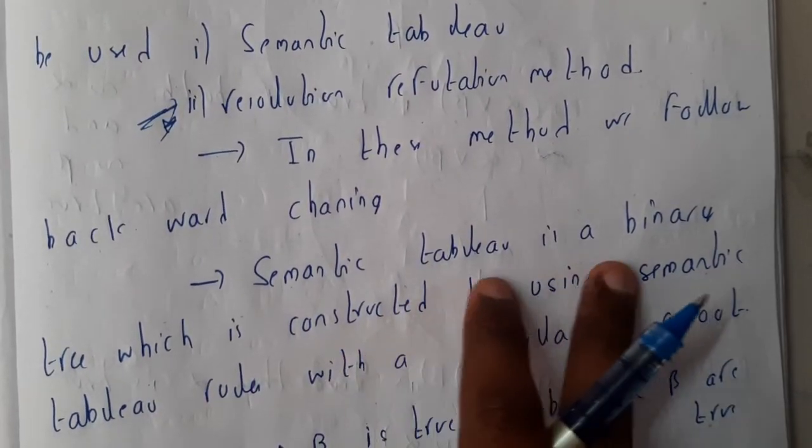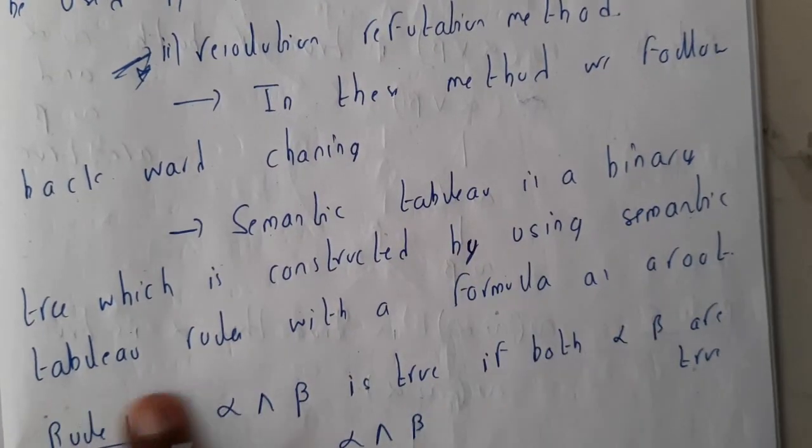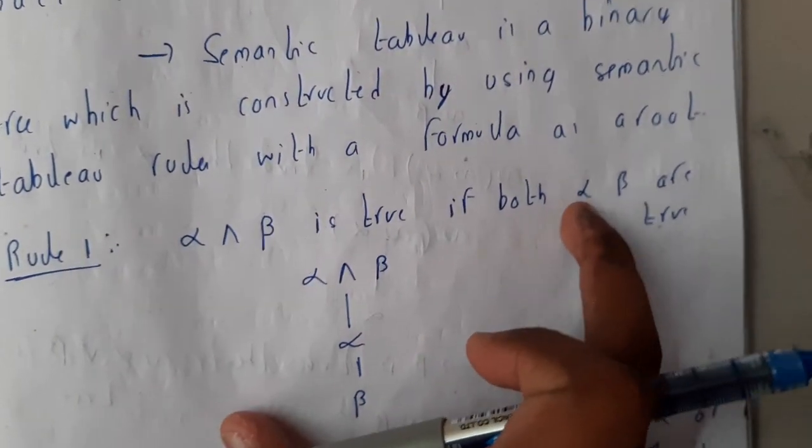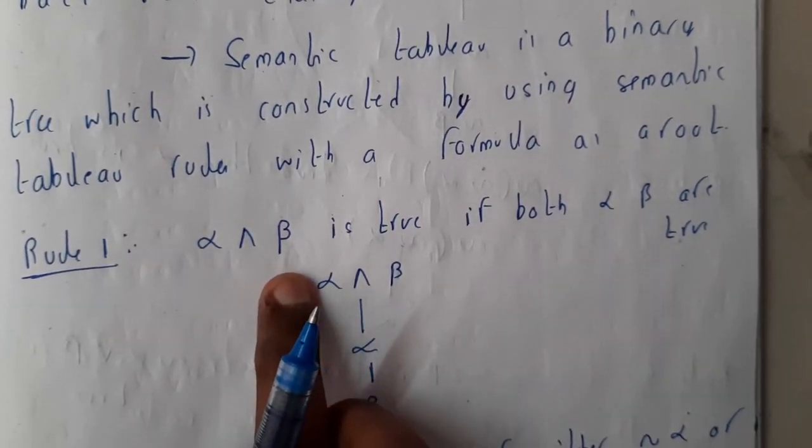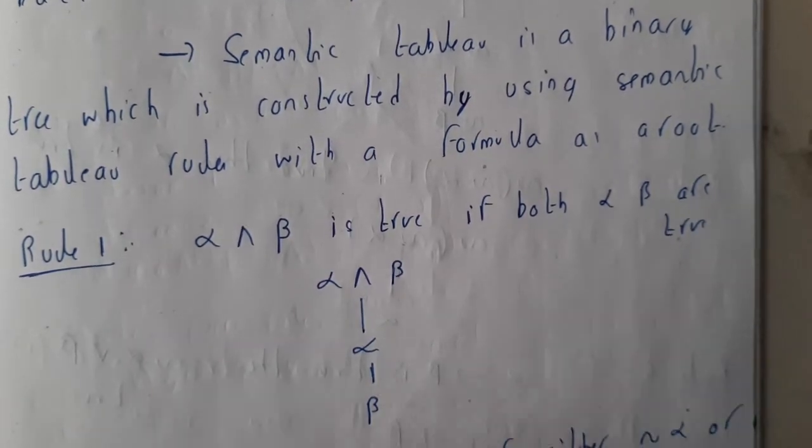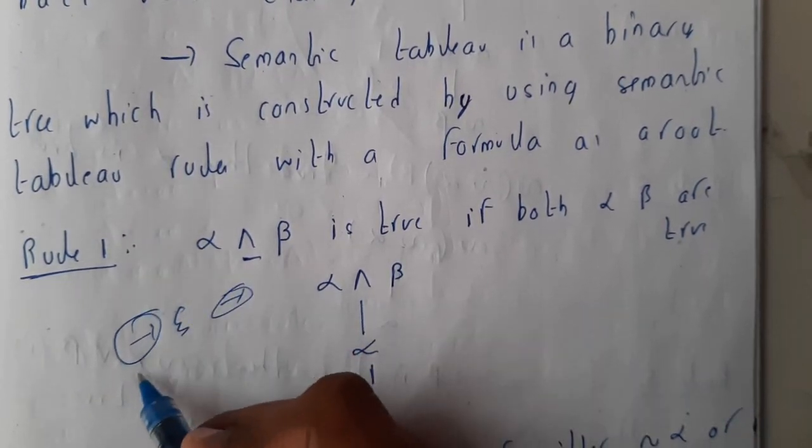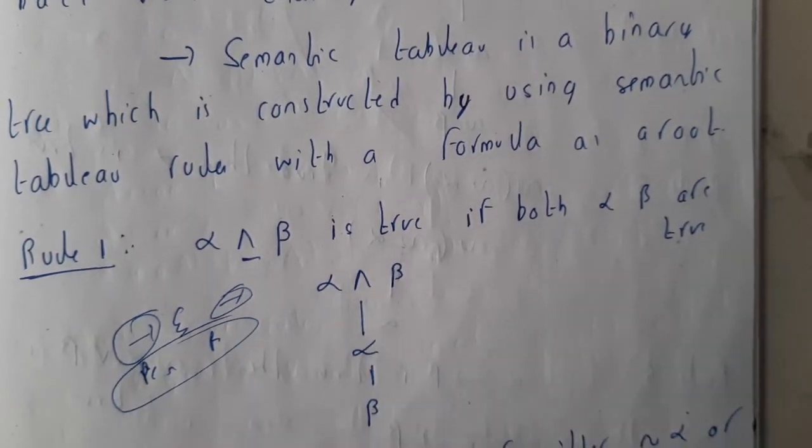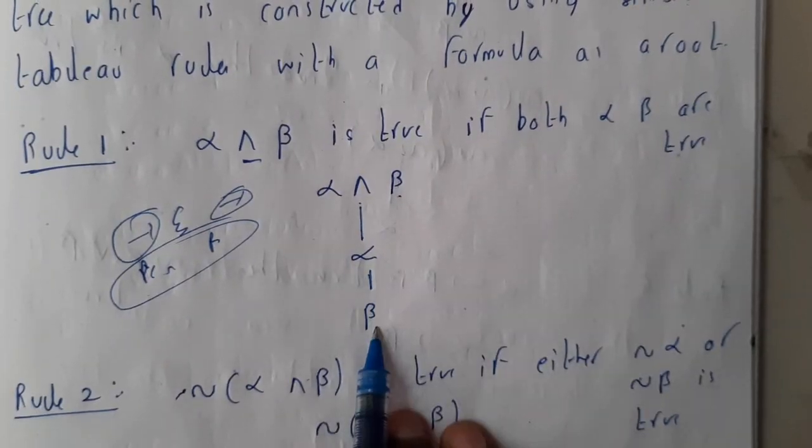Semantic tableaux is a binary tree constructed by using the semantic tableaux rules with a formula as a root. So here the formula will be given and we will be deriving a tree for it. If it is alpha AND beta, I'll just say some tricks - please remember them. AND means this then right. So you want both, so you'll be writing one after the other: alpha and beta.